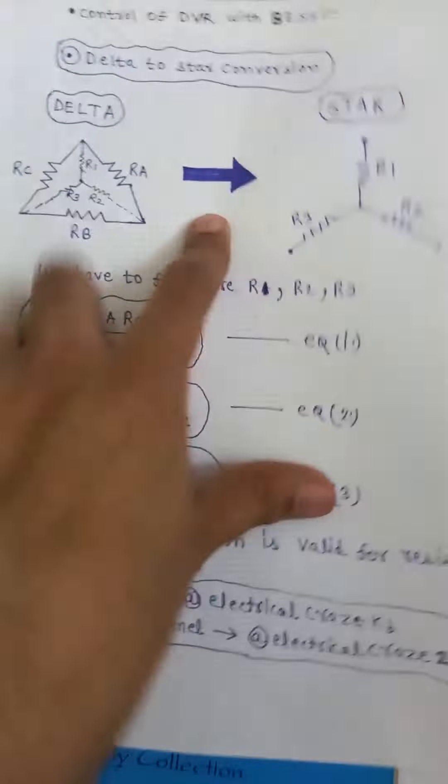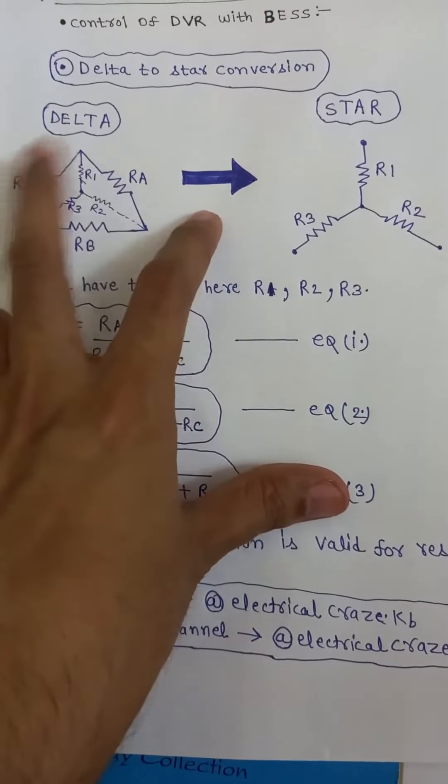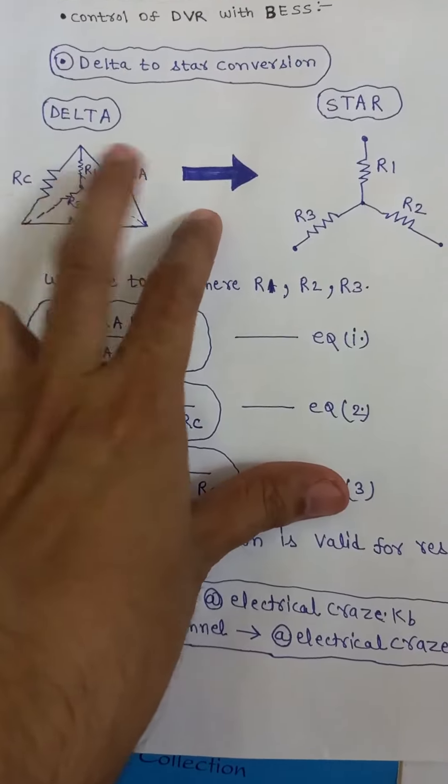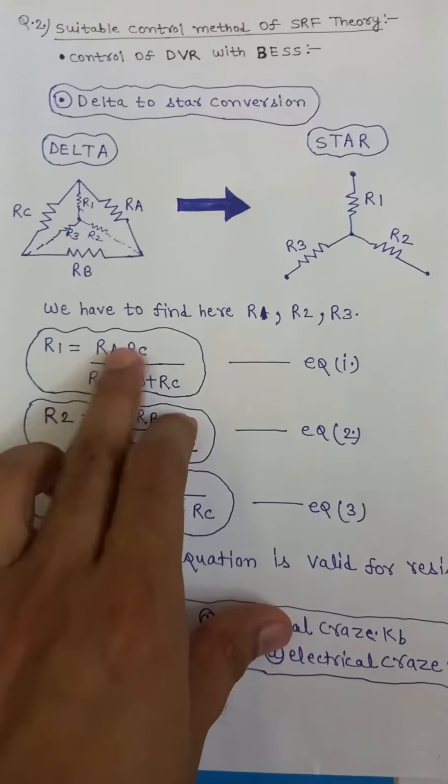For numerator how to find? See, for R1, the two resistances along with them are Rc and Ra. Put here Rc and Ra.